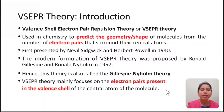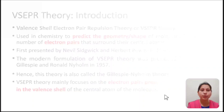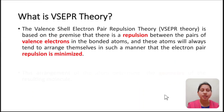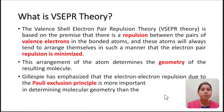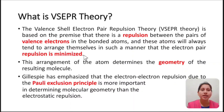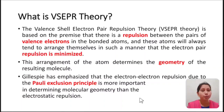VSEPR theory mainly focuses on the electron pairs present in the valence shell of the central atom of the molecule. The VSEPR theory is based on the premise that there is repulsion between the pairs of valence electrons in the bonded atoms, and these atoms will always tend to arrange themselves in such a manner that the electron pair repulsion is minimized. This arrangement of atoms determines the geometry of the resulting molecule. It was Gillespie who emphasized that the electron-electron repulsion due to the Pauli exclusion principle is more important in determining the geometry than the electrostatic repulsion.